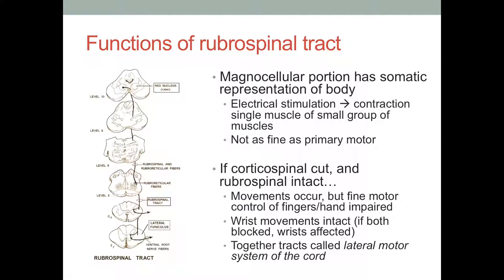If the corticospinal tract is cut and rubrospinal is intact — so only damage to the pyramidal system — you have movements, but really fine motor control of hands and fingers is impaired because the primary motor cortex has the largest mapping. The rubrospinal can't take all of that really fine mapping at once. Wrist movements are intact. If both the cortico and rubro are blocked, the wrists are affected. If we take both corticospinal and rubrospinal together, we call them the lateral motor system of the cord — the side muscle affecting system of the spinal cord.